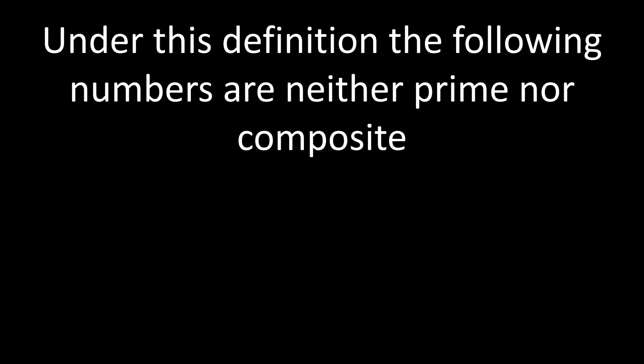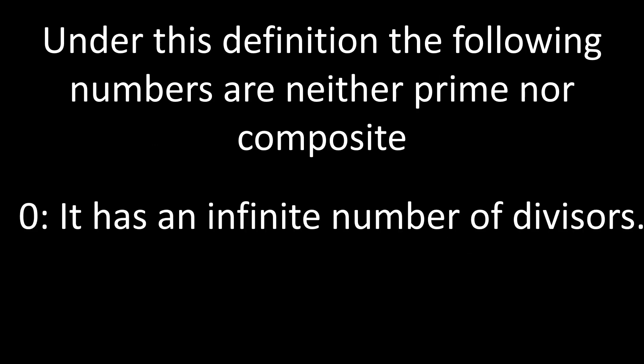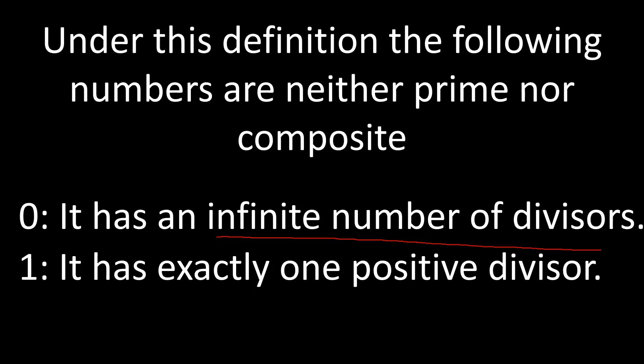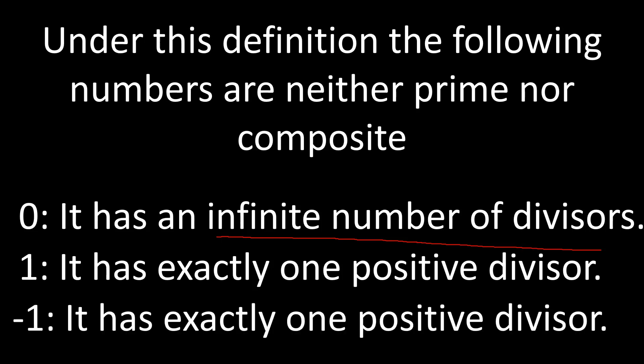Under this definition, the following numbers are neither prime nor composite. Zero is neither prime nor composite because zero has an infinite number of divisors — any natural number divides zero, so one divides zero, two divides zero, and so on. We're not going to consider zero a prime number, and it has too many divisors to think of as composite, so we exclude it. One has exactly one positive divisor, which is one, so it's not prime, and it's neither composite because it doesn't have more than two. Similarly for negative one. So zero, one, and negative one are considered neither prime nor composite.